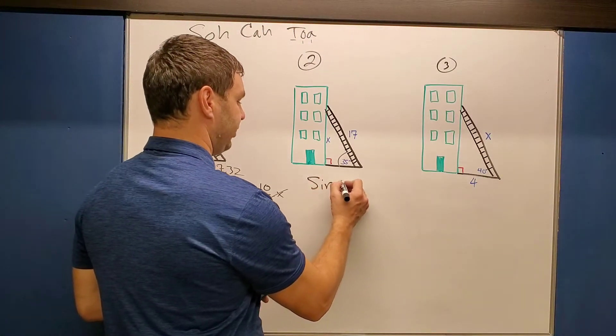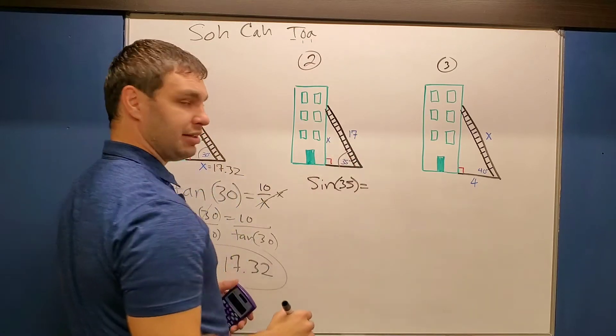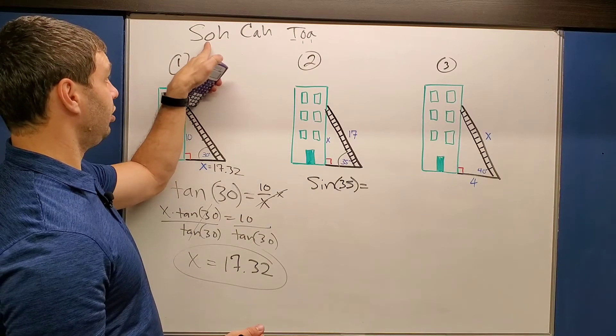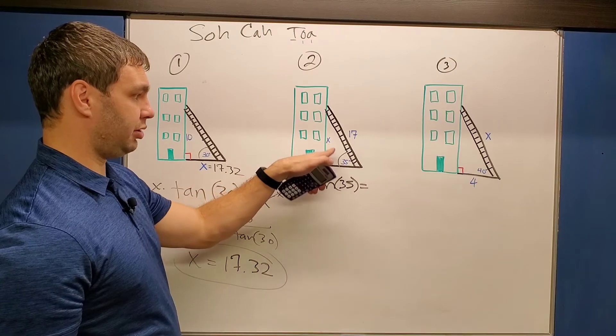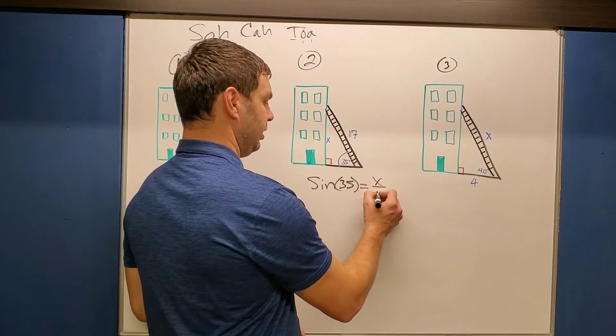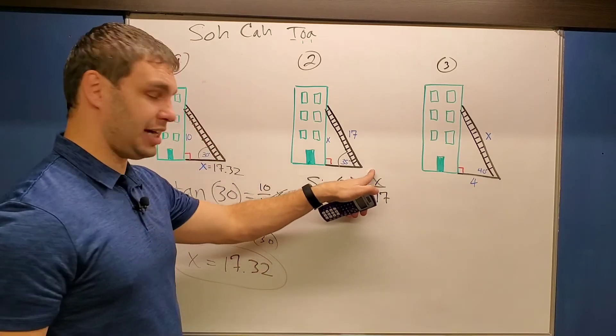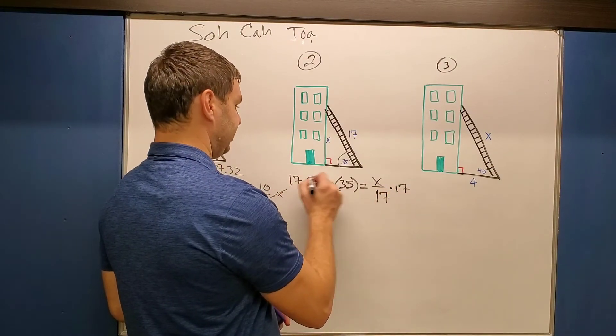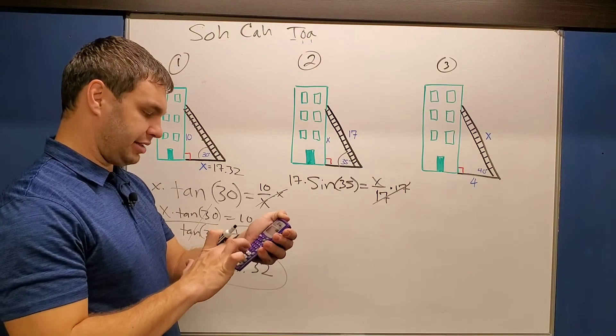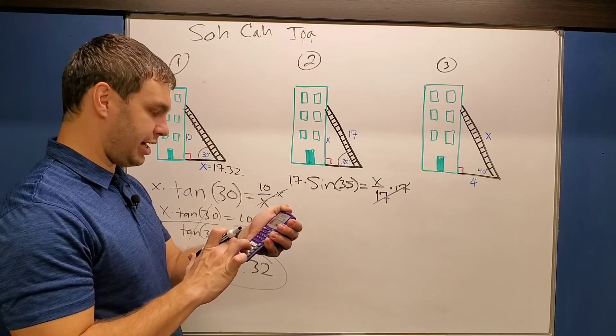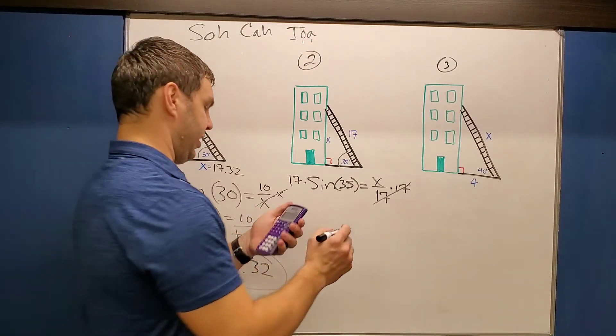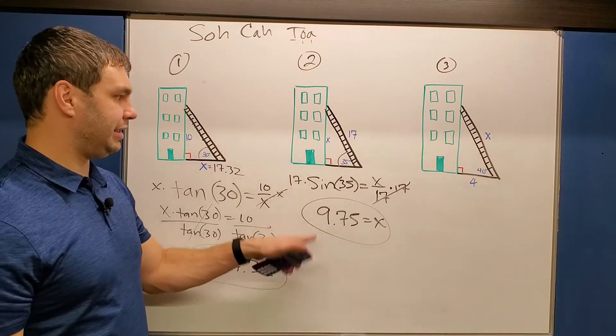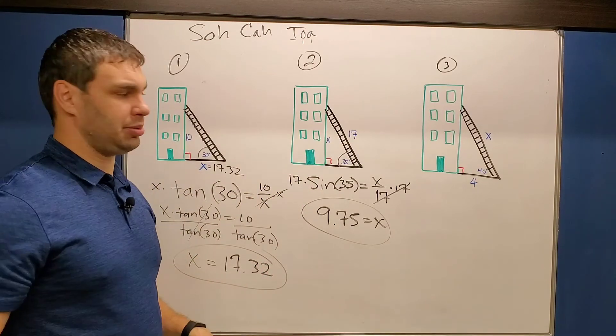So we're going to say sine of 35 equals the opposite over the hypotenuse. If you're struggling with which one goes on top, which one goes on the bottom, just look at the order of SOHCAHTOA, O and then H. So we're going to do opposite, the X, over the H hypotenuse, X over 17. This time it's a little bit nicer because the X is in the top of our fraction. We just have to multiply by 17 to get the X isolated. So times by 17 on both sides, they're going to cancel over here. On the left side, we can just type it in the calculator exactly like it looks, 17 times sine of 35, and that gives me 9.75. That should have been less than 17 and it is, so we probably did it correctly.